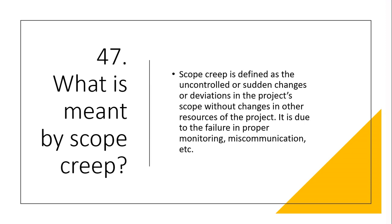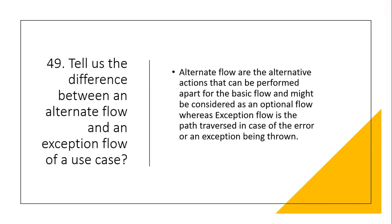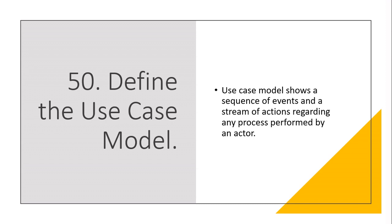Question 48: What does SQUARE stand for? SQUARE stands for Security Quality Requirements Engineering. It is one of the software engineering steps that mainly focuses on documenting the security requirements of the system. Question 49: What is the difference between an alternate flow and an exception flow of a use case? Alternate flow refers to the alternative actions that can be performed apart from the basic flow and might be considered an optional flow, whereas exception flow is the path traversed in case of an error or an exception being thrown. Question 50: Define the use case model. A use case model shows a sequence of events and a stream of actions regarding any process performed by an actor.